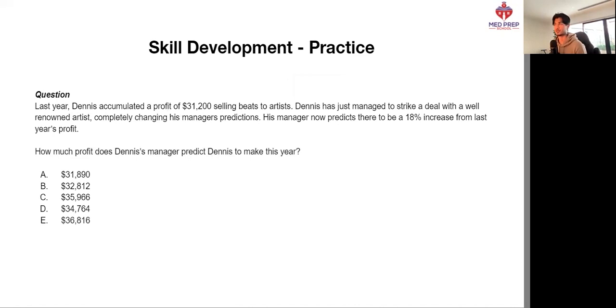Another one. Last year, Dennis accumulated a profit of 31,200 selling beats to artists. Dennis has just managed to strike a deal with a well-renowned artist, completely changing his manager's predictions. His manager now predicts there to be an 18% increase from last year's profit. What is an 18% increase? So how much profit does Dennis' manager predict Dennis to make this year? An 18% increase. If there was no increase, what would it be? It'd be 1.00 times 31,200.